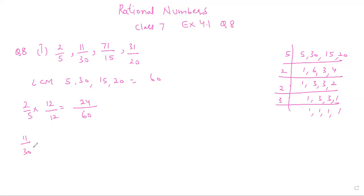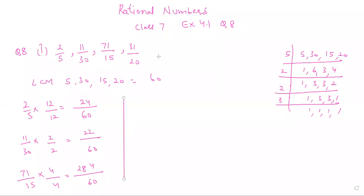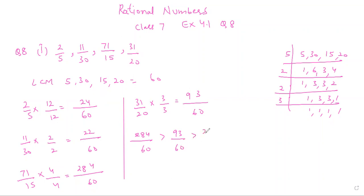Next, 71/15 multiplied by 4/4 gives 284/60. And lastly, 31/20 multiplied by 3/3 gives 93/60. Now arranging the numbers — since no number is given in negative form — the largest number is 284/60, then 93/60, then 24/60, and the smallest is 22/60.